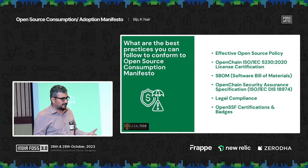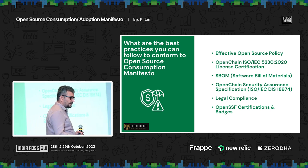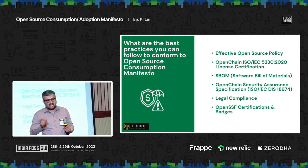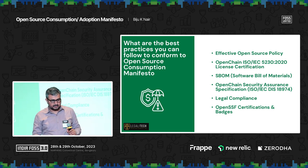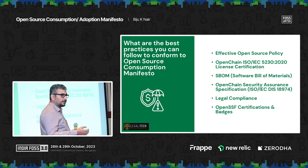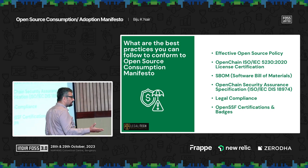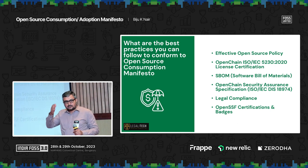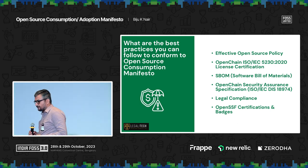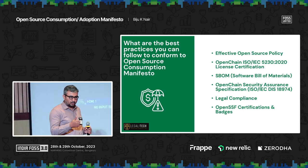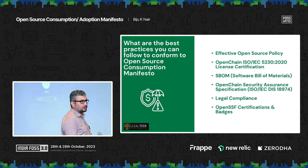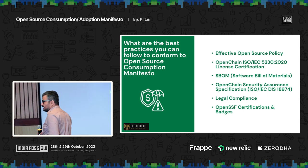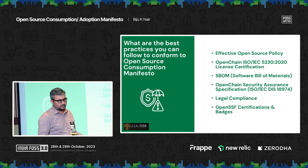There are best practices even for software bill of materials. After the Colonial Pipeline case and the SolarWinds case, the US government has mandated that every software it uses must have an SBOM — whether you are a supplier providing an app to any US government department, central or state, you must have a software bill of material, because it gives visibility on the complete stack. There is SPDX, which is also an ISO standard today, as well as CycloneDX and other standards — but SPDX is preferred as it is an ISO standard.